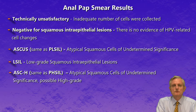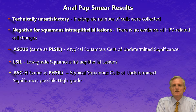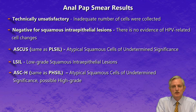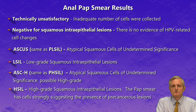ASC-H stands for atypical squamous cells of undetermined significance, possible high grade. This means the laboratory has identified some abnormal-looking cells which are suggestive, but not conclusive, that there may be high-grade disease present.